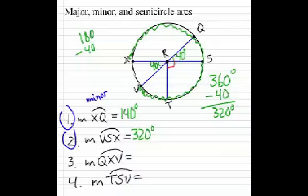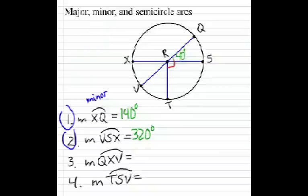Next question. What is the measure of arc QXV? Now I notice that the VQ segment is obviously a diameter. So, easy question there, 180 degrees. Notice that you have a semicircle arc. If it's exactly half the circle, it's a semicircle, and it's still considered a major arc.